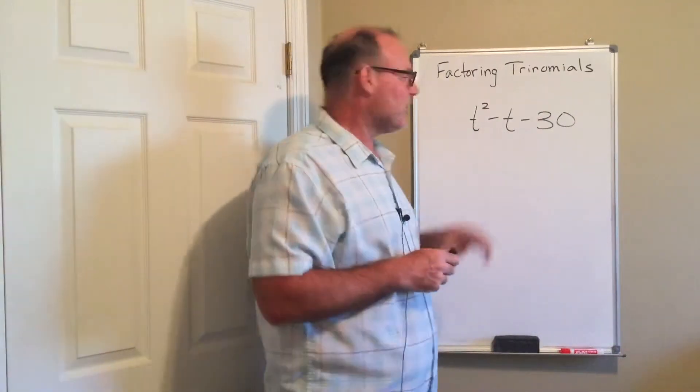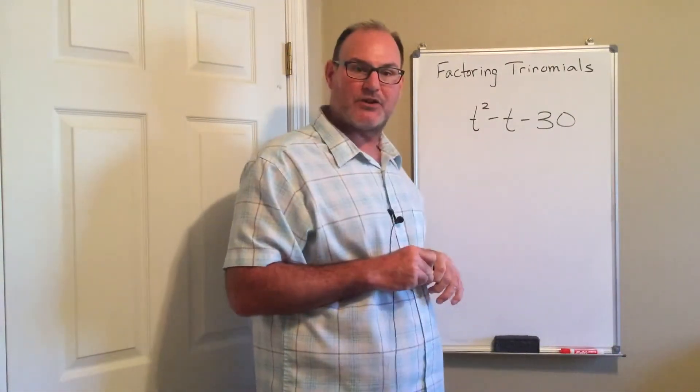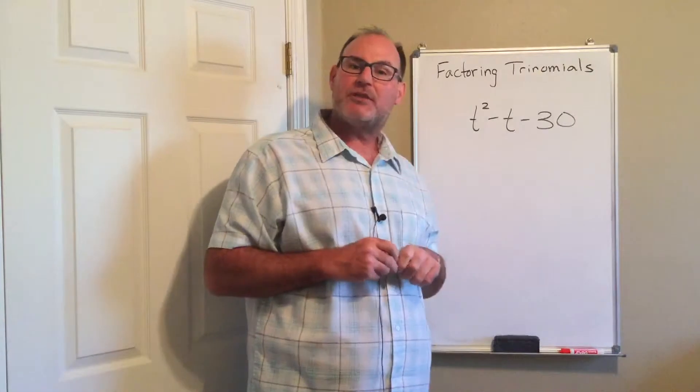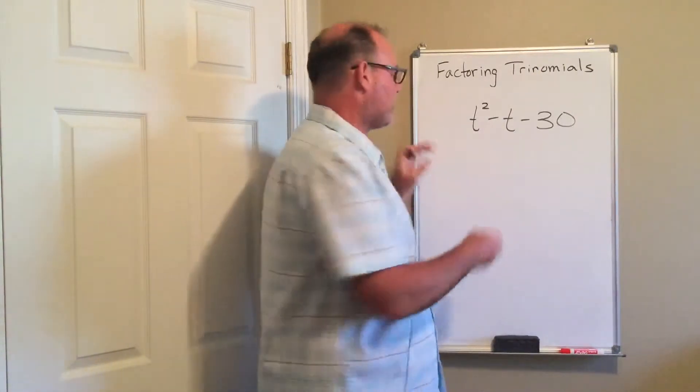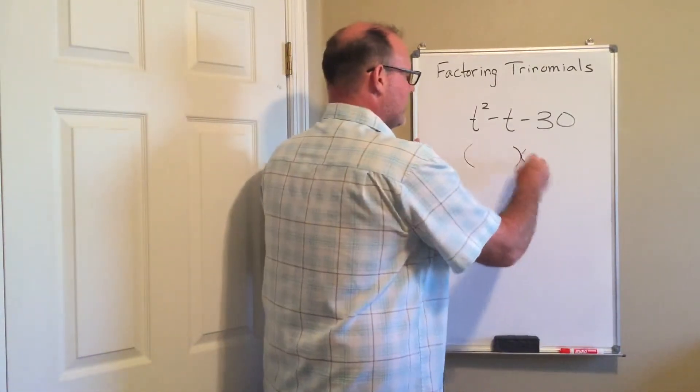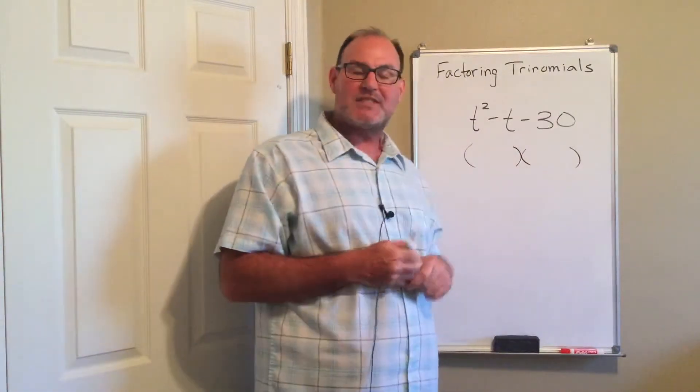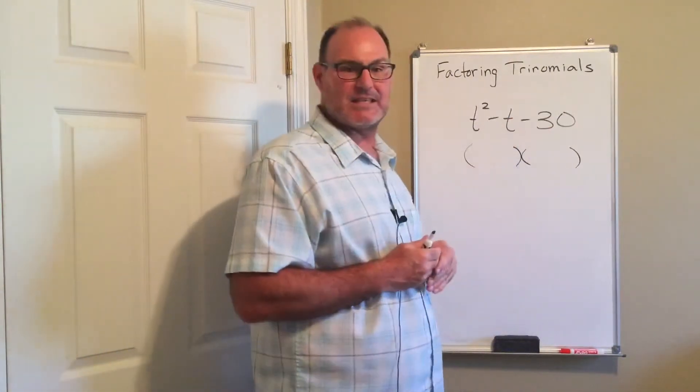We're factoring a trinomial here that has a 1 in front of the squared term. When there is a 1 in front of the squared term, that streamlines my process. So I can just go right to my two binomials that I foiled in order to get this.